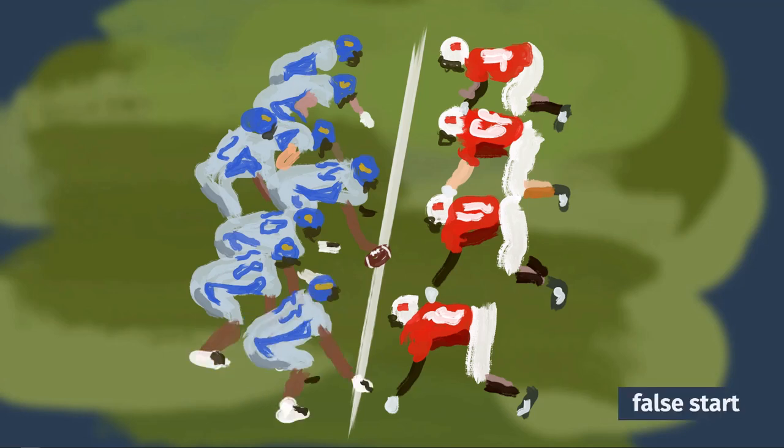A false start will be called when one of the offensive players moves before the snap — usually no more than a small flinch. This rule can sound confusing because players on the line can still turn their heads, but you'll recognize a false start after seeing a few examples. When this happens, referees throw their flags and blow their whistles to stop the play. The head referee announces false start, noting it's a loss of five yards, so the ball moves back five yards and the down is replayed — instead of first down and 10, it becomes first and 15.